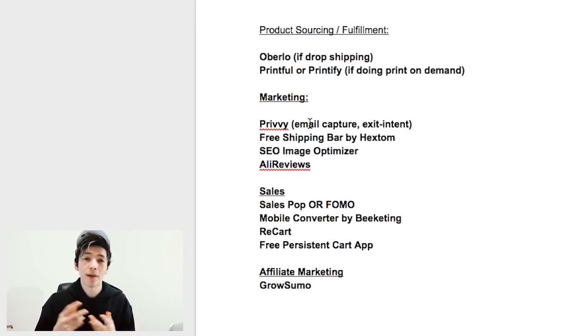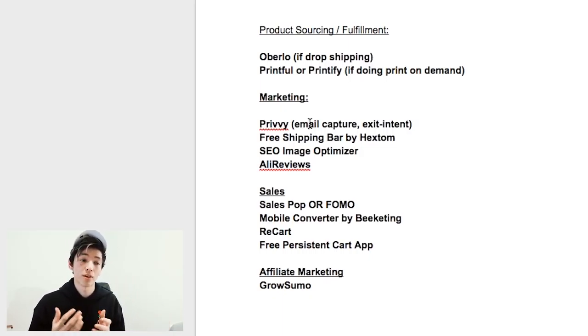First: Oberlo — it's basically required for Shopify dropshipping. Download that, it's free. Next: Privy, for marketing. It basically does email pop-ups and exit intent — that's mainly what I use it for. So if a customer's on your site and they're about to leave, a little pop-up comes up and you hit them with a big discount. Most of the time you hit them with a really big discount, so big that they don't really say no, because if they're already leaving, that means they weren't going to buy from you anyway.